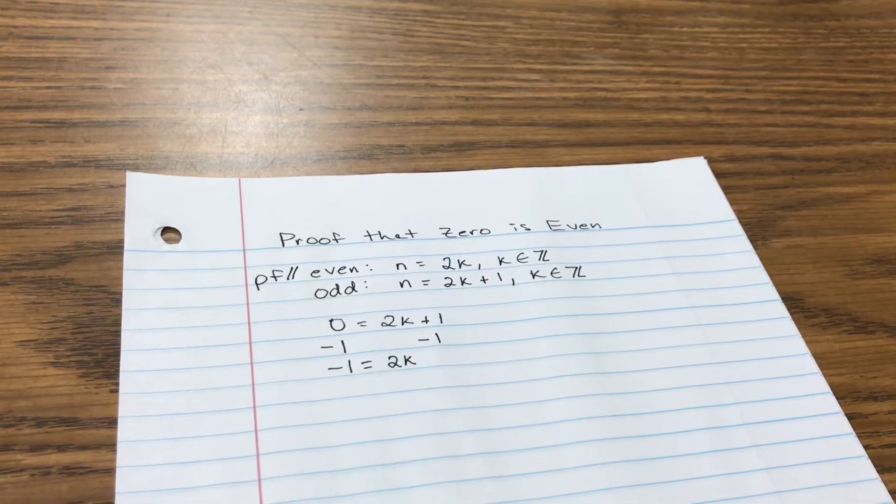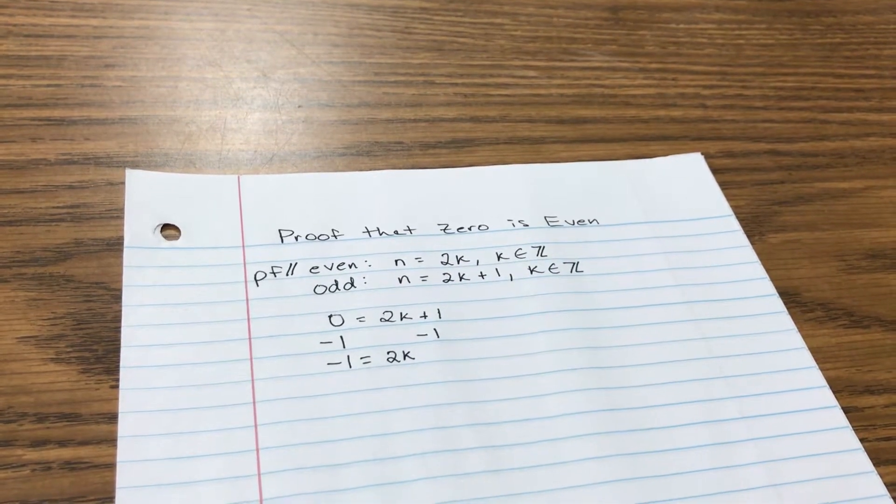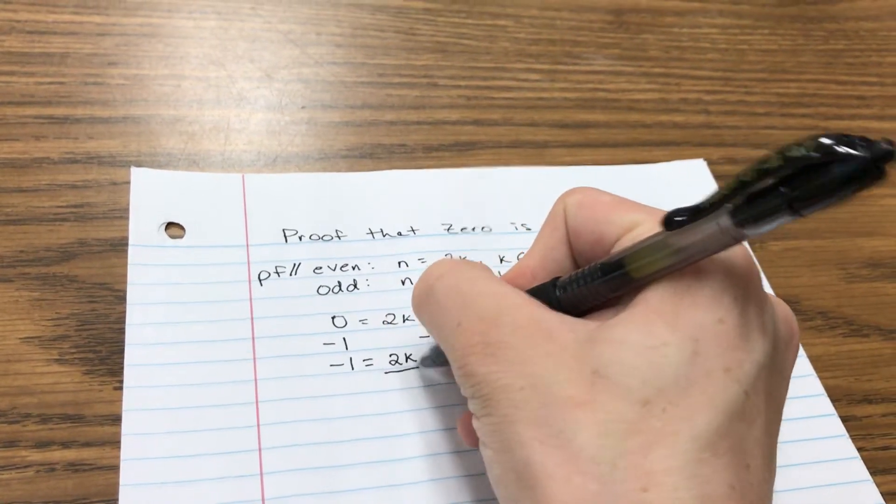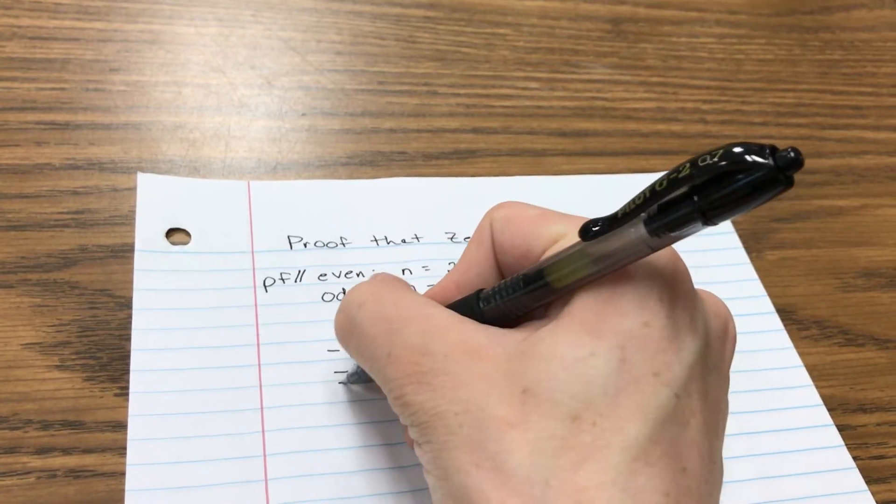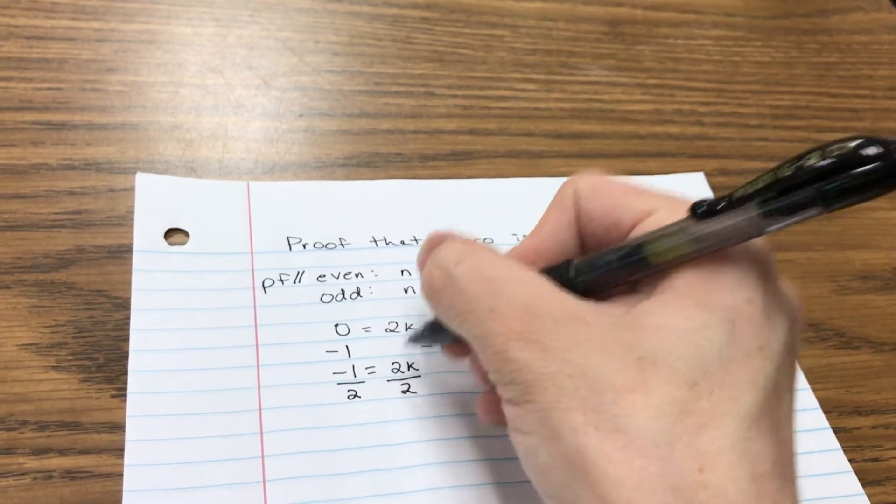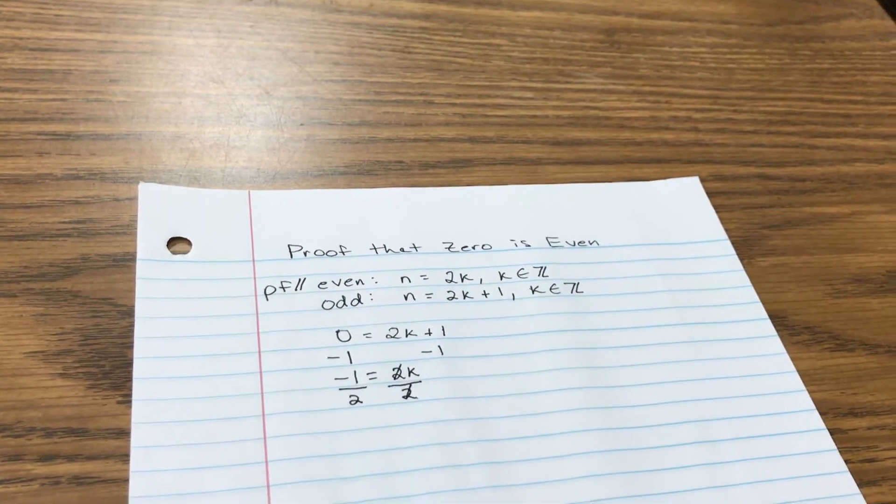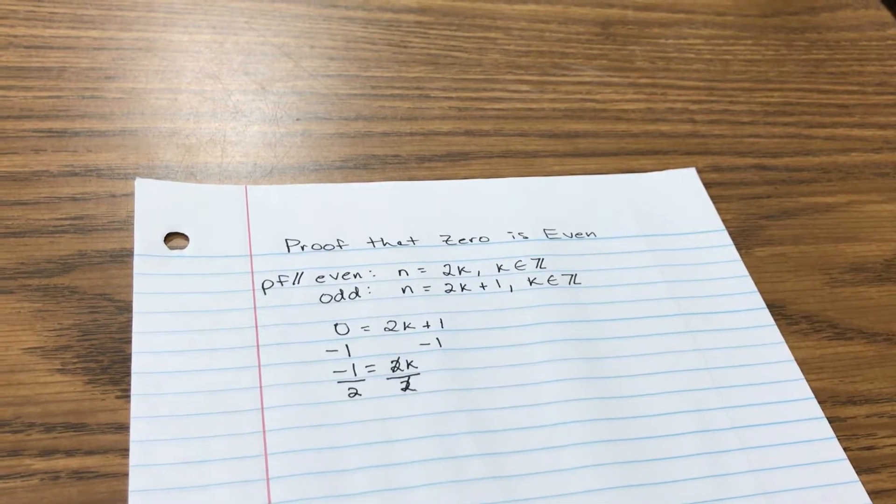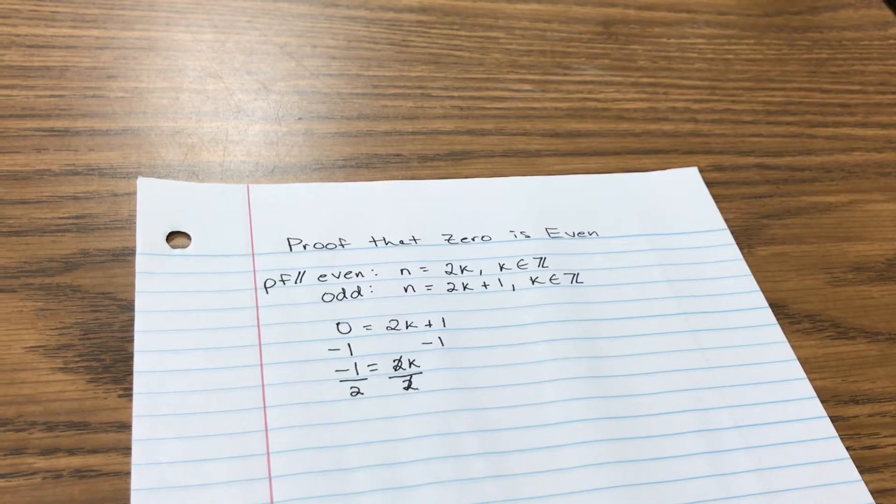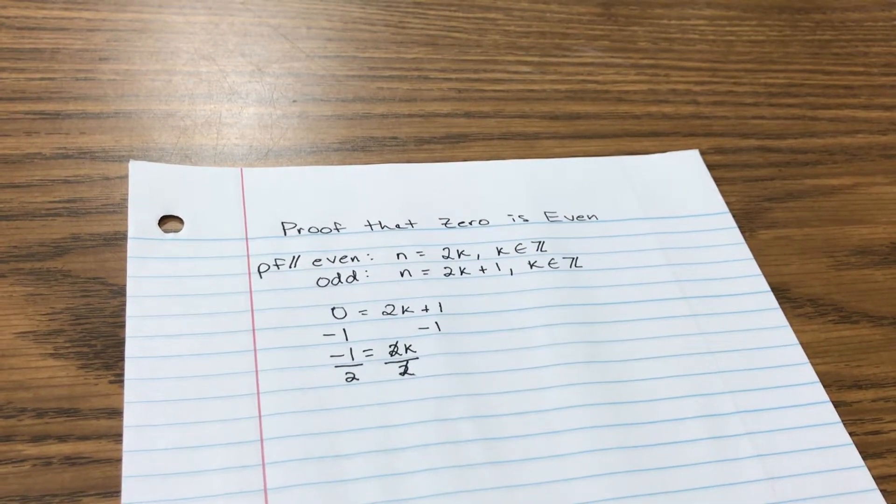And I still want to get k by itself, so what I'm going to do is divide by 2 on both sides just so I can get rid of that coefficient of 2. And you'll see how it does because they reduce and k is left by itself. Okay, so it turns out that k is equal to negative 1 half. Oh, but wait.